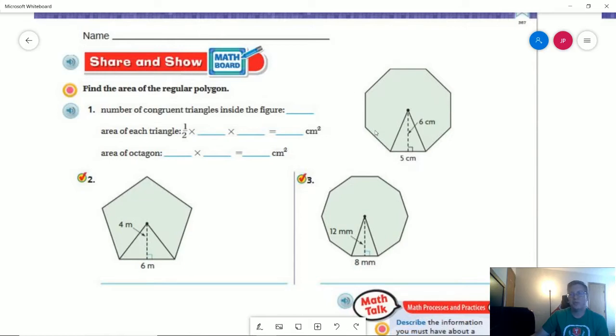In a perfect world, I might ask you to take a ruler and draw those in. But understanding that we are working from home, you may not have access to all of those. So I will have one, two, three, four, five, six, seven, eight different congruent triangles inside the figure because I have eight sides.